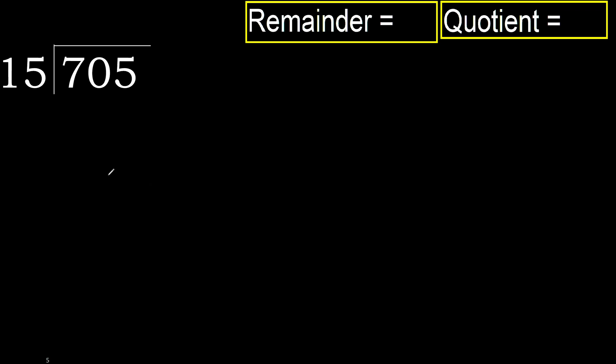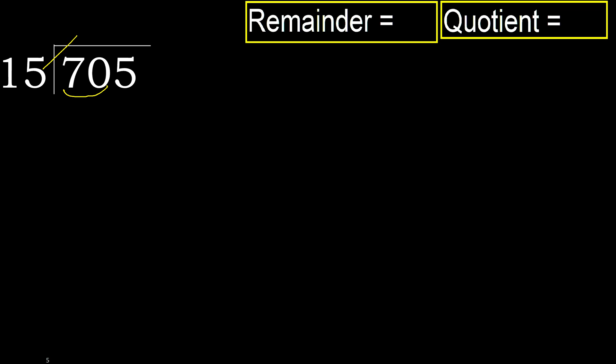705 divided by 15. 7 is less, therefore next. 70 is not less, therefore we work with 70. 15 multiplied by which number is nearest to 70, but not greater?